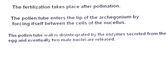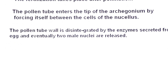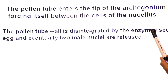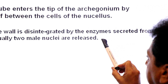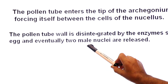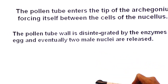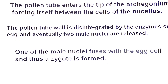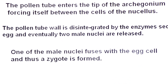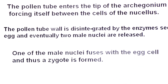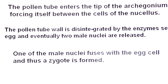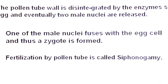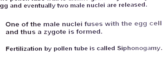The pollen tube wall disintegrates due to enzymes secreted from the egg, and two sperm cells (male nuclei) are released into the archegonium. One of the male nuclei fuses with the egg cell, forming a diploid zygote within the archegonium. Fertilization by pollen tube is called siphonogamy.